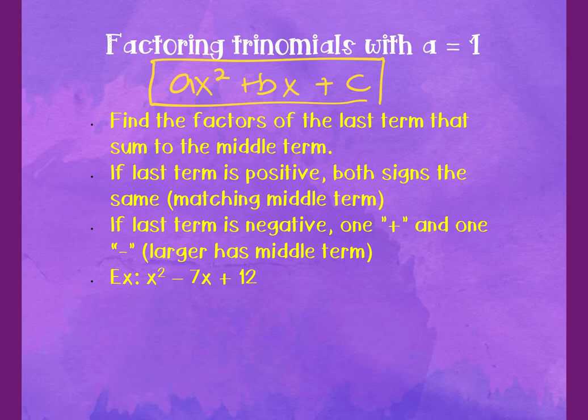Find the factors of the last term that sum to the middle term. List all the factors and find the two that add up to the middle term. If the last term is positive, both signs will be the same — matching the middle term. If the last term is negative, one has to be positive and one negative, with the larger matching the middle term.